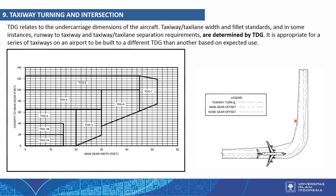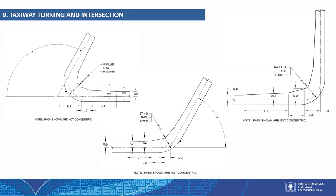This is a picture of a taxiway turning. The center line, main gear offset, and nose gear offset are shown. There are three lines to consider in the design of a taxiway turning.